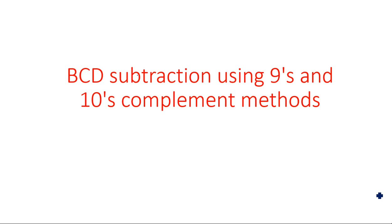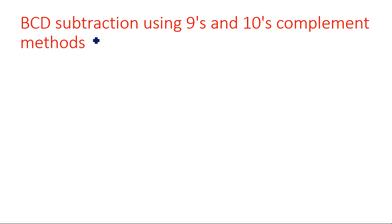In this video I am going to explain BCD subtraction using nines complement and tens complement. The complement method is used for subtraction. Nines complement is nothing but 9 minus the given number, and tens complement is nines complement plus 1. This is analogous to ones complement and twos complement. The main purpose of nines complement and tens complement — or any complement whether it is 1, 2, 9, or 10 — is to provide subtraction between two numbers.